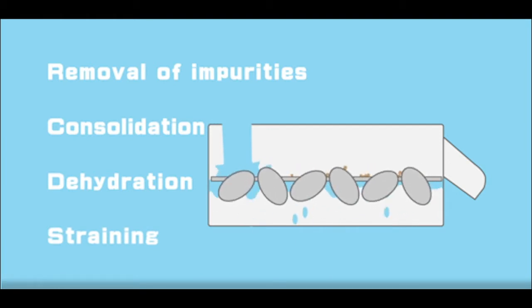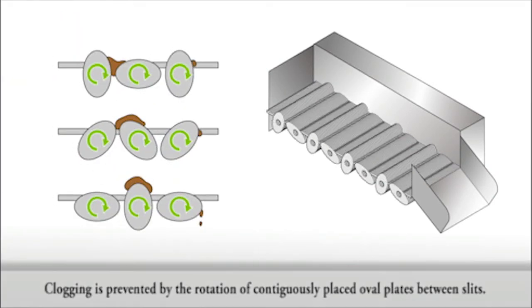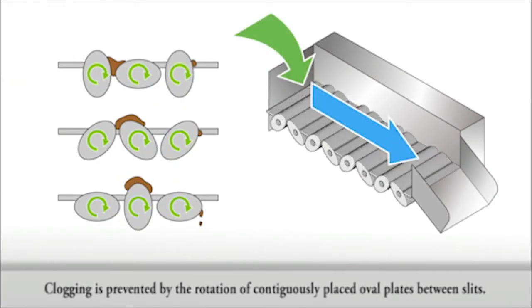UDS has three main features. Number one is clog-free slits. Clogging is prevented by the rotation of continuously placed oval plates between slits.